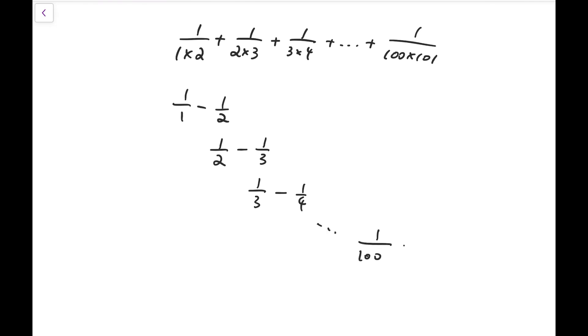And the last term is 1 over 100 minus 1 over 101. Then the middle terms will cancel out, and so what remains is just 1 over 1 minus 1 over 101, and the sum becomes very easy.